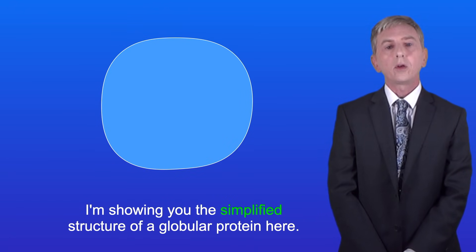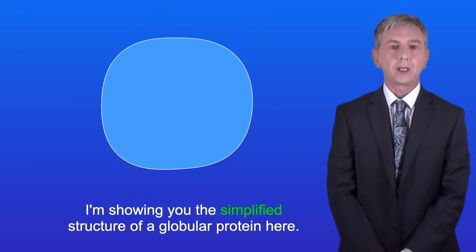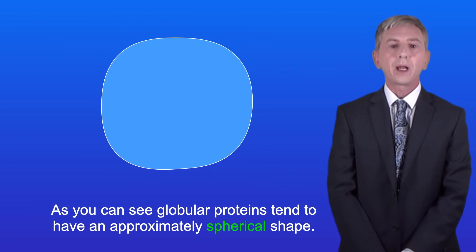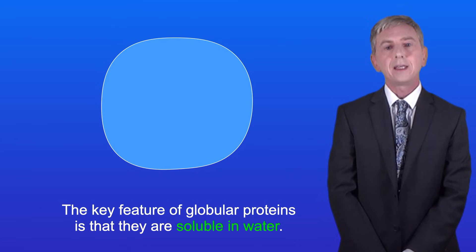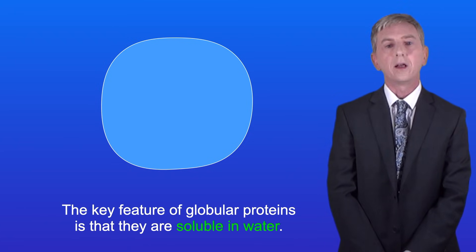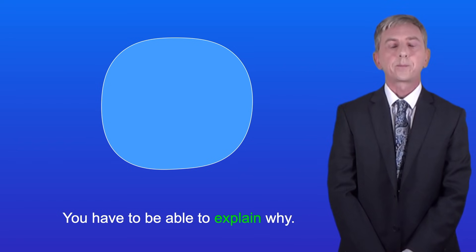I'm showing you the simplified structure of a globular protein here. As you can see, globular proteins tend to have an approximately spherical shape. Now the key feature of globular proteins is that they're soluble in water, and you have to be able to explain why.